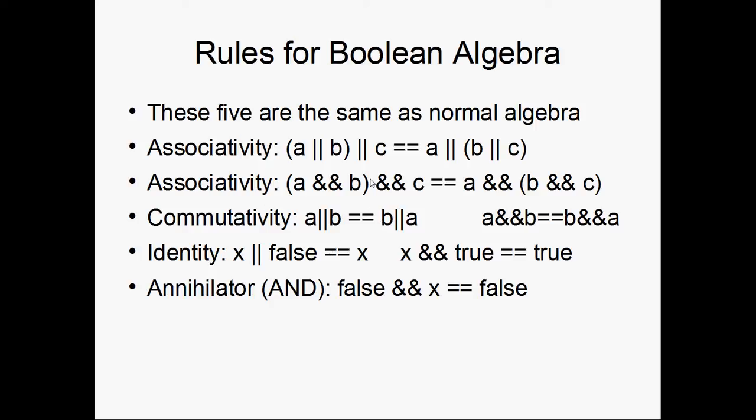Commutativity, so if you switch the order it doesn't matter, just like normal algebra. Identity: x || false == x, and x && true == true. This should be x, not true. That should simply be x, right there.